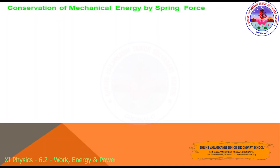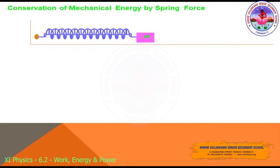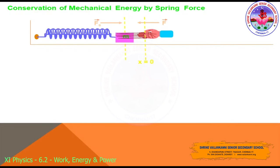Now we will look at conservation of mechanical energy by spring force — specifically, conservation of energy in an elastic spring. If we stretch a spring to a distance x_m, its potential energy is kx_m²/2. When released, the spring begins to move and reaches the equilibrium position x = 0, where it has maximum velocity. At this point, all the potential energy is converted into kinetic energy due to the inertia of motion.